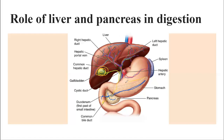The pancreas produces three different digestive enzymes: pancreatic amylase, lipase, and trypsin. They digest everything completely — maltose to glucose, peptides to amino acids, and emulsified fats into fatty acids. We have covered all these things in our previous video.